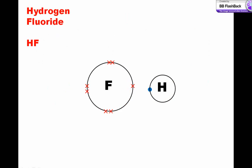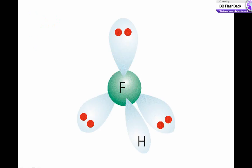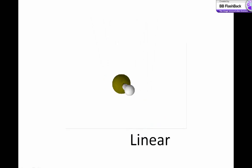Looking at hydrogen fluoride, a single covalent bond is formed, which results in an arrangement of electrons like this, and leads to a linear arrangement of the atoms.